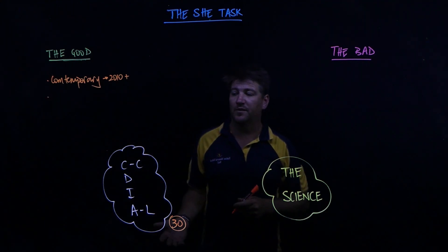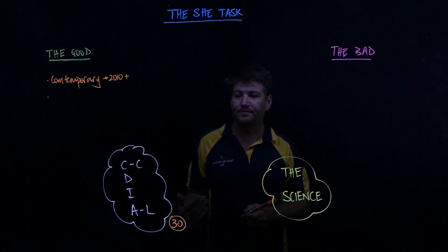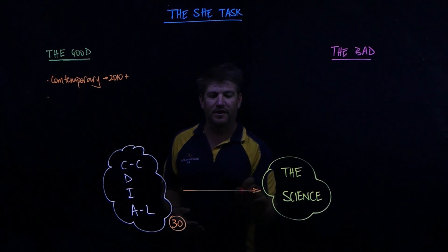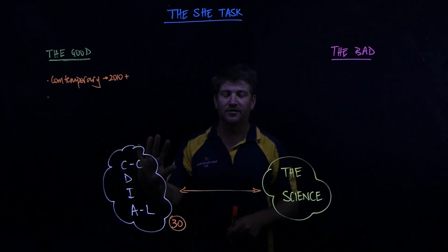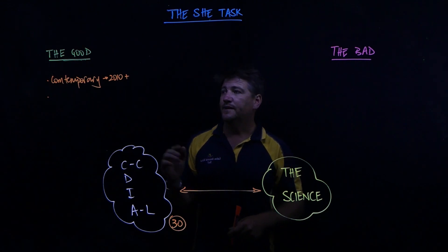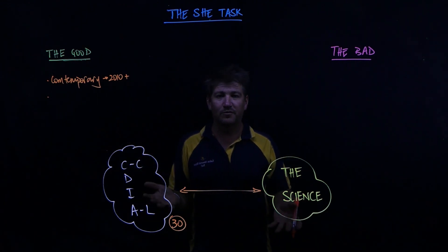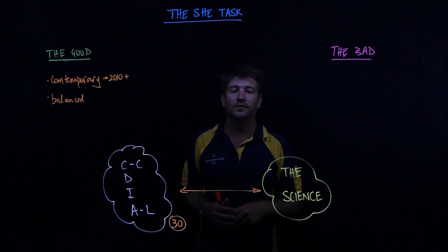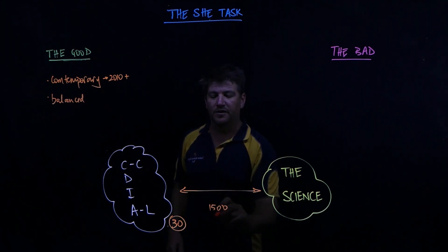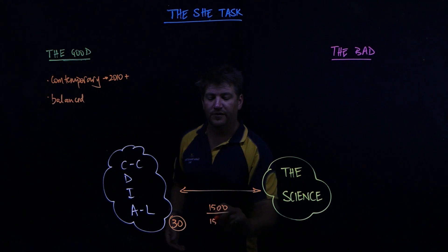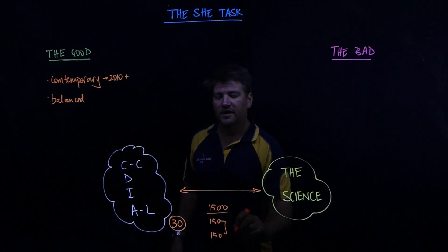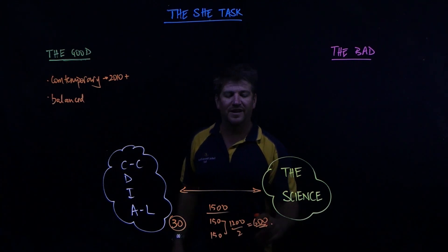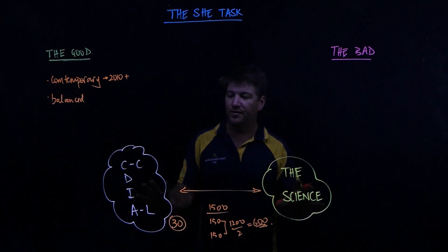They're not just contemporary, they're also balanced in terms of the spread between the two ideas. You have to talk about the SHE stuff and the science stuff, and it needs to be a reasonably fair balance. If you're looking at something around 1,500 words, you'll have an introduction — about 150 for the intro, 150 for the outro. That leaves about 1,200 words, so roughly 600 words each — a couple of paragraphs per thing.